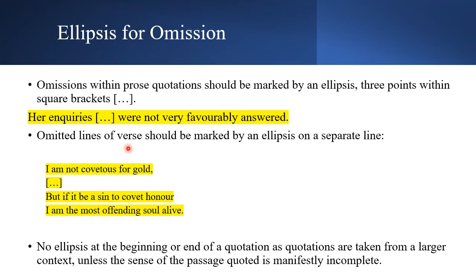For poetry, omitted lines of verse should be marked by an ellipsis placed on a separate line, not inside the sentence. If you are quoting poetry and a line is not relevant, you put the ellipsis on its own line to show that a line of verse is missing or omitted. This is the key difference between prose and poetry: in prose, the ellipsis runs inside the sentence; in poetry, it goes on a separate line.